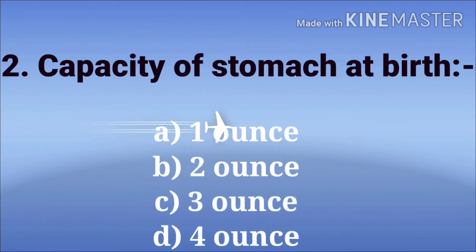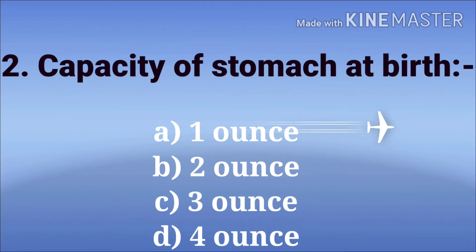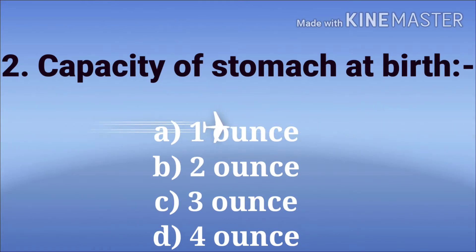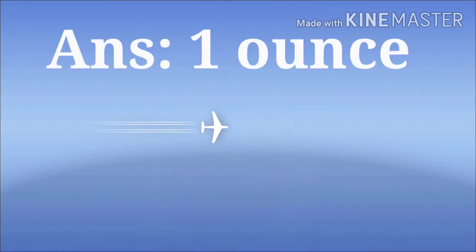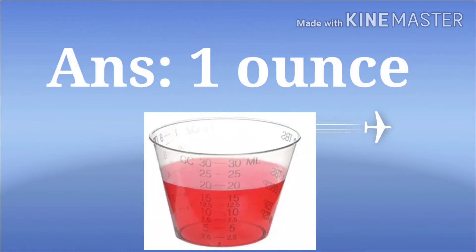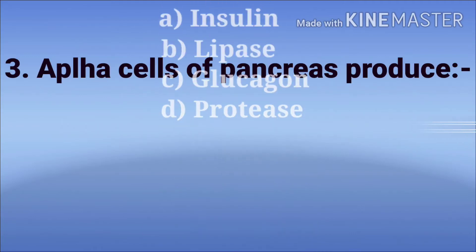Second question: capacity of stomach at birth. The options are 1 ounce, 2 ounce, 3 ounce, and 4 ounce. The answer is 1 ounce — 1 ounce means 30 ml.